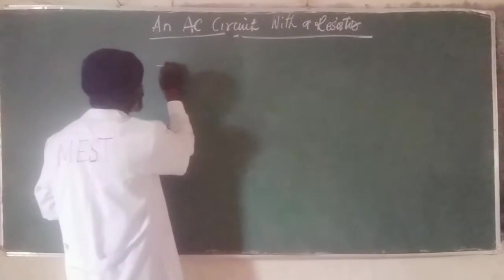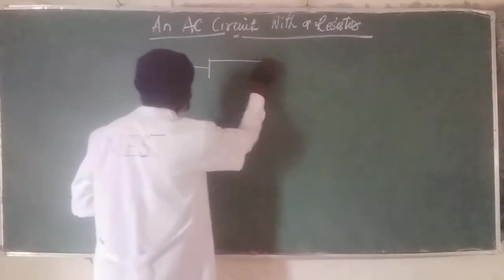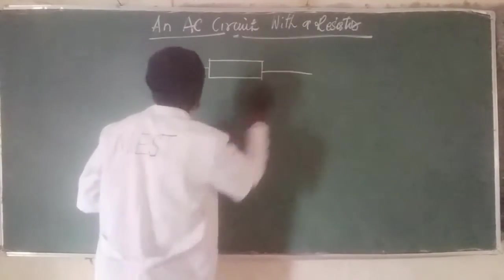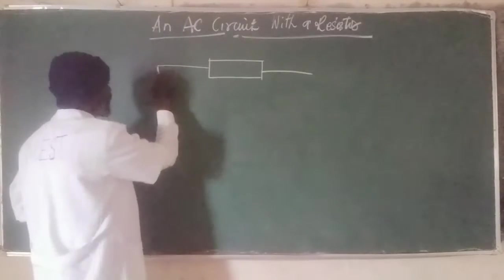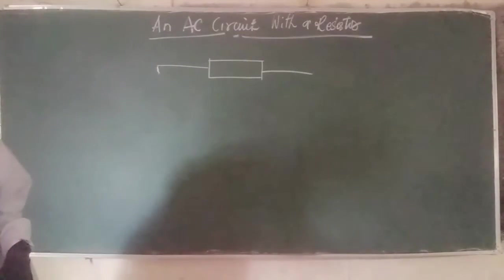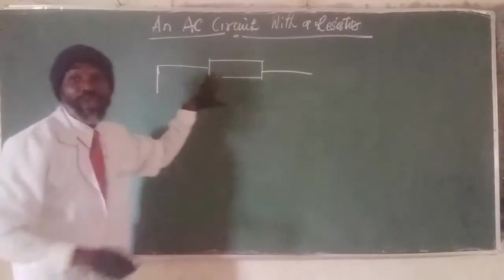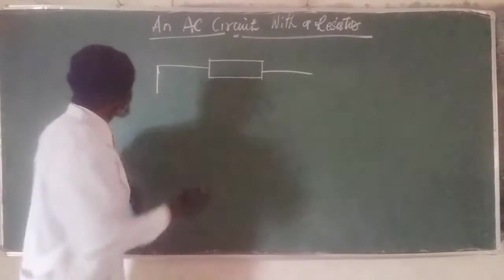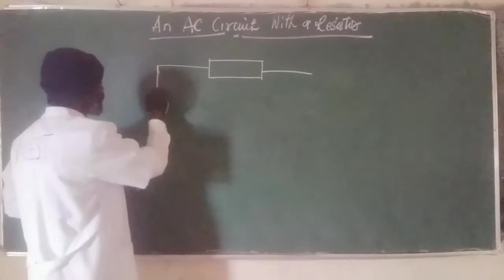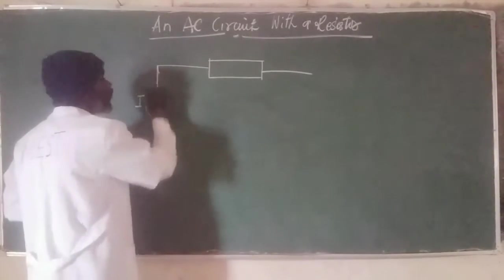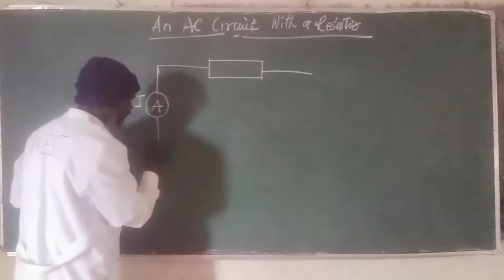So we have this big resistor. This is going to be some sort of ammeter measuring the amount of current flowing in there. This is ammeter. Of course, it's going to give us current I flowing through.